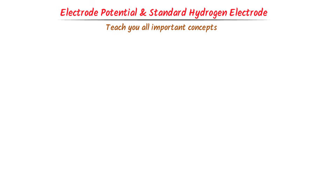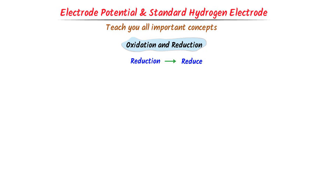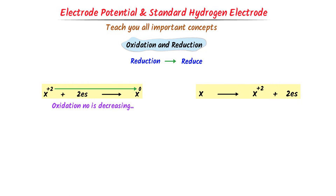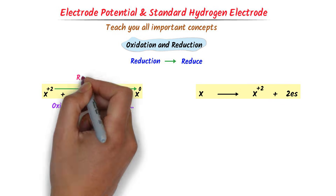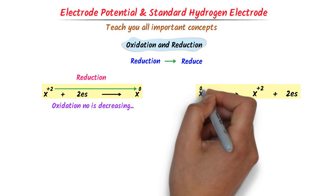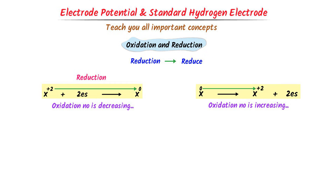First of all, let me quickly revise oxidation and reduction. We know that reduction means reduce or decreasing. Consider these reactions. In the first case, the oxidation number is reducing from positive 2 to 0, hence it is reduction. In the second case, the oxidation number is not reducing but increasing from 0 to plus 2, hence it is oxidation.